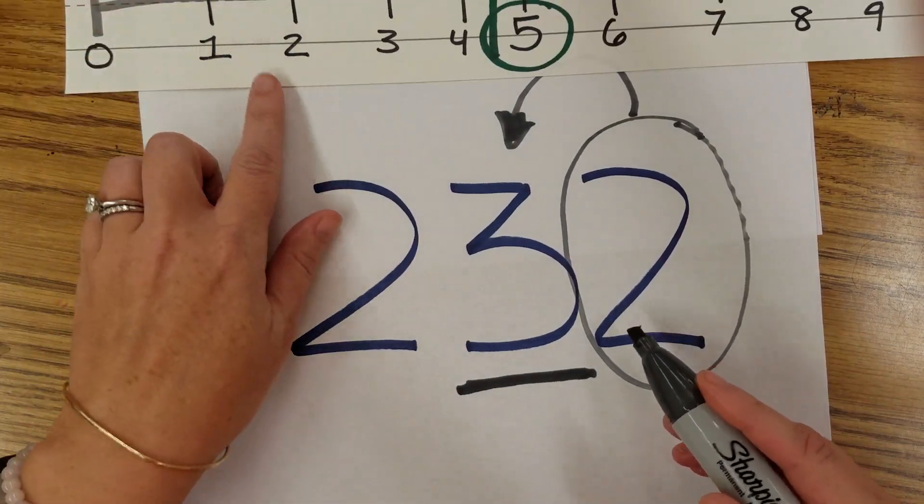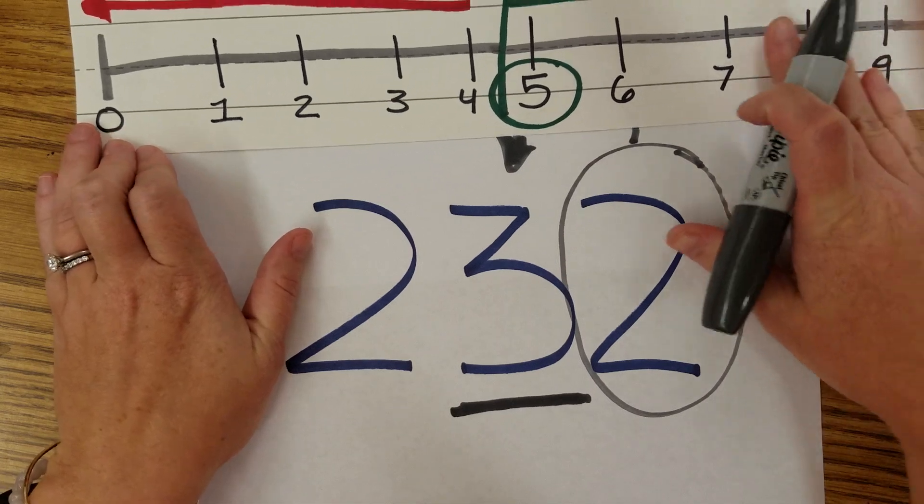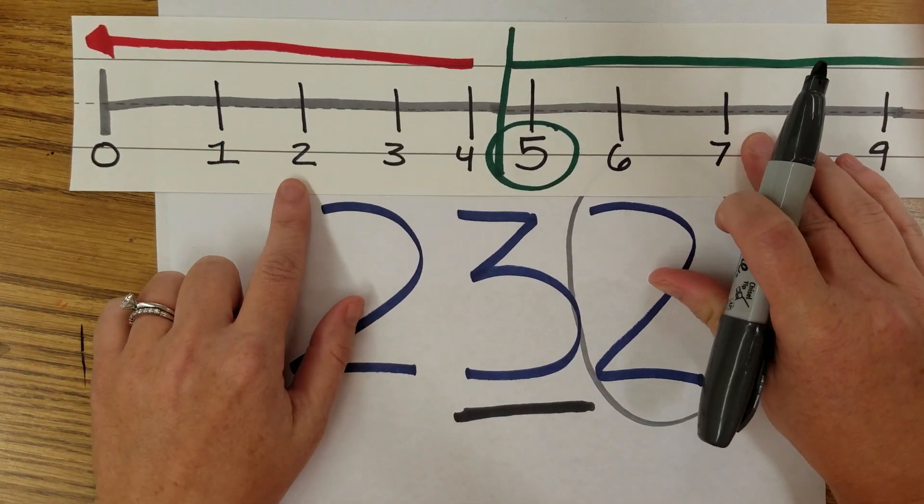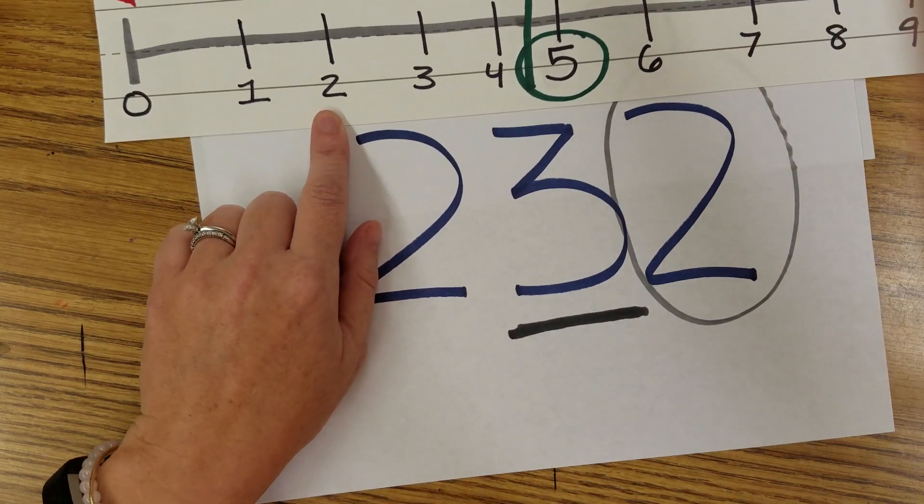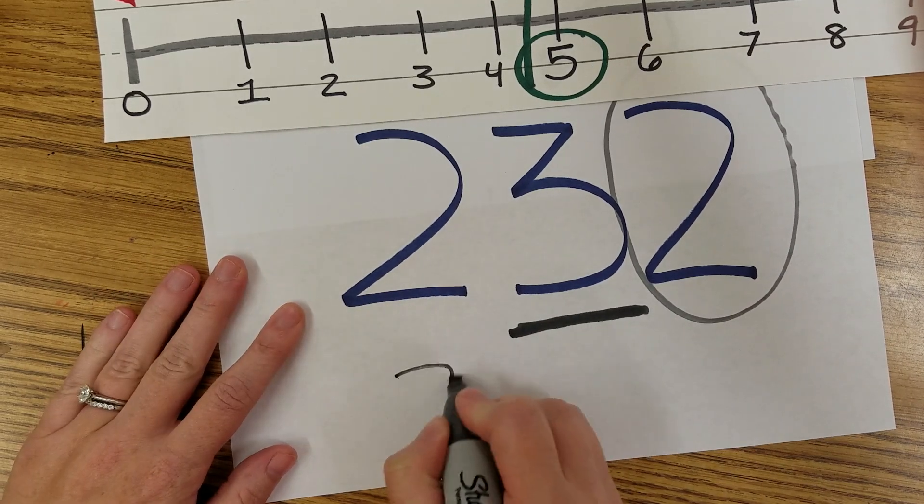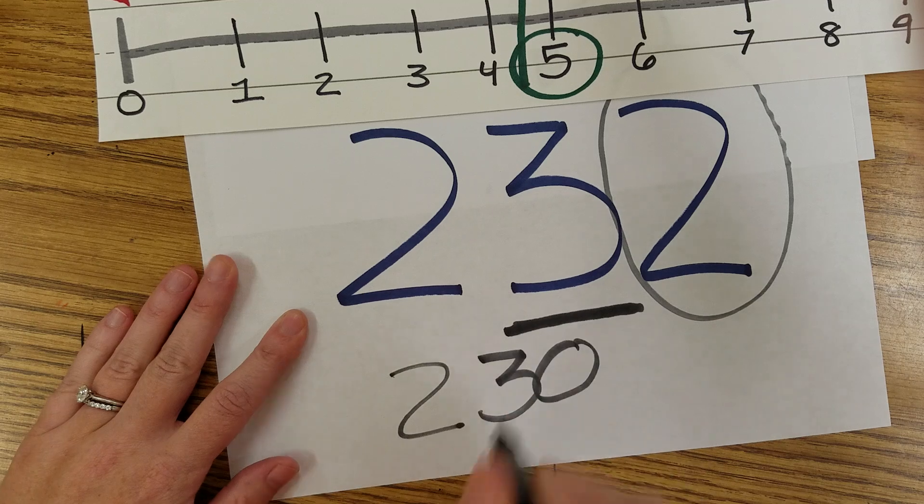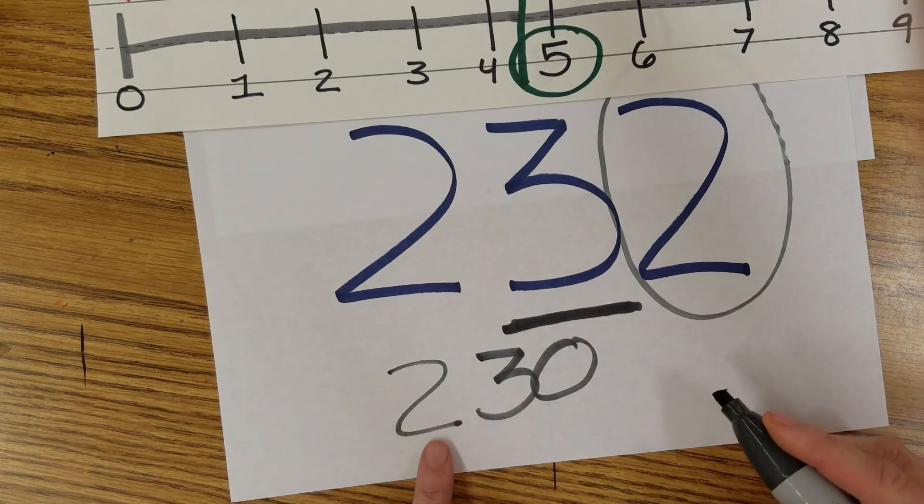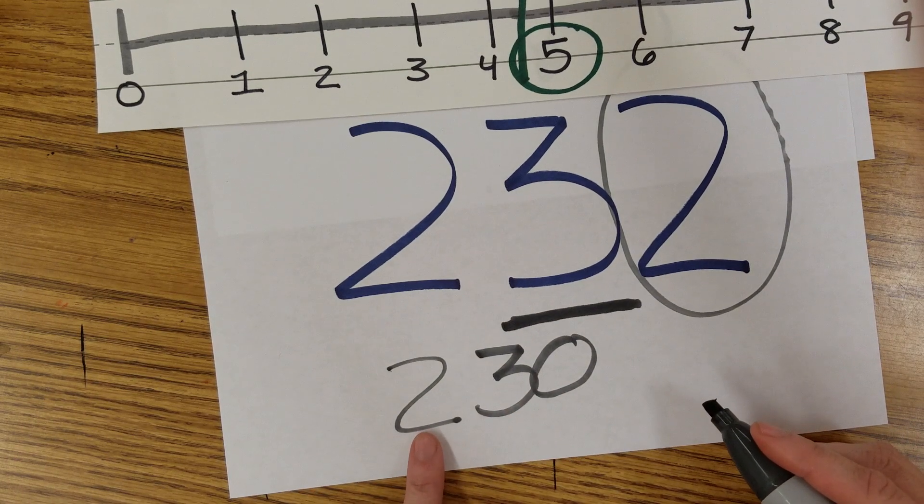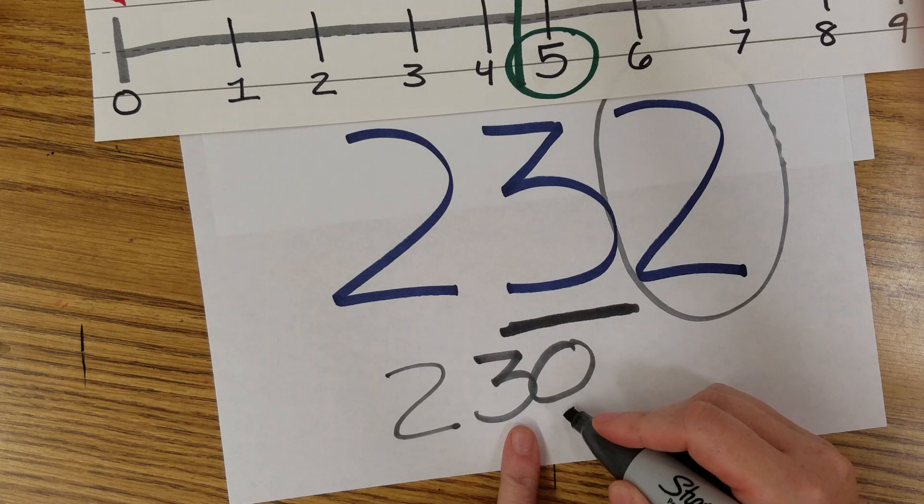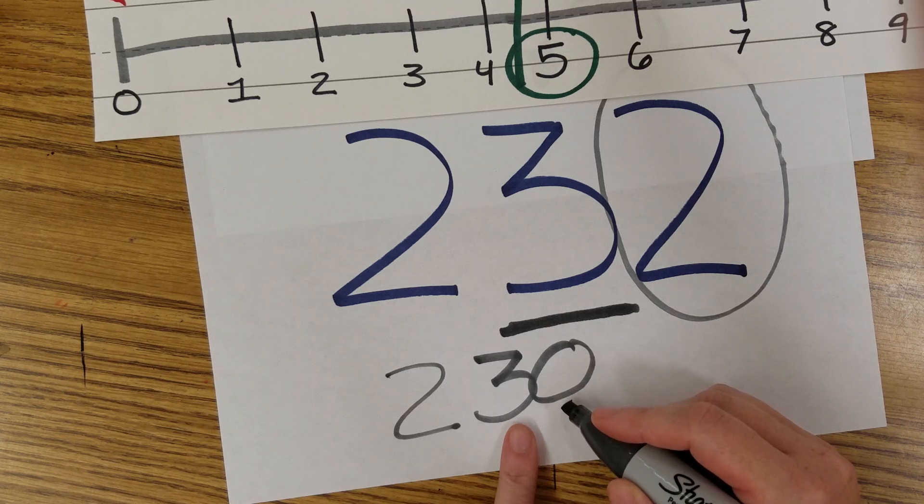And again, if we look here on our number line, you can see the two says to stay. Tells that ten to stay exactly where it's at. So you're going to round it to two hundred thirty. You can't forget the two hundred. You have to always leave that there. The hundred stays, and then we're just rounding the ten, just like we always would.